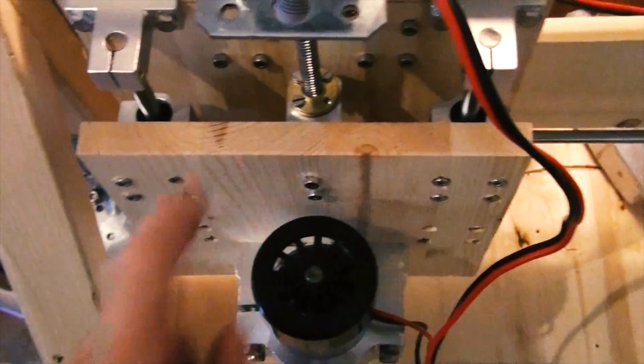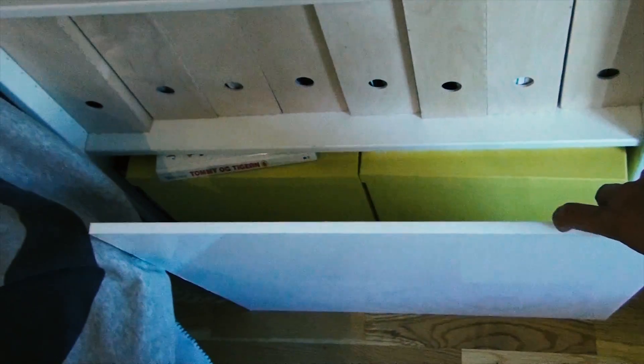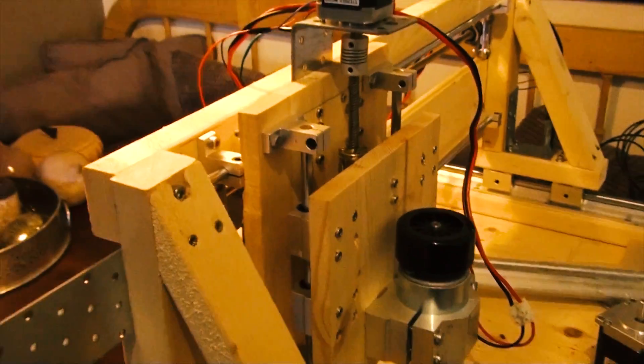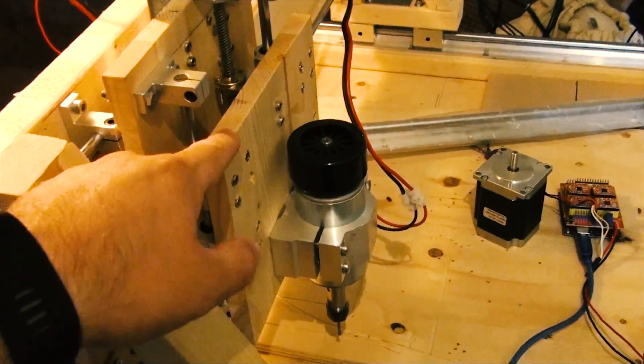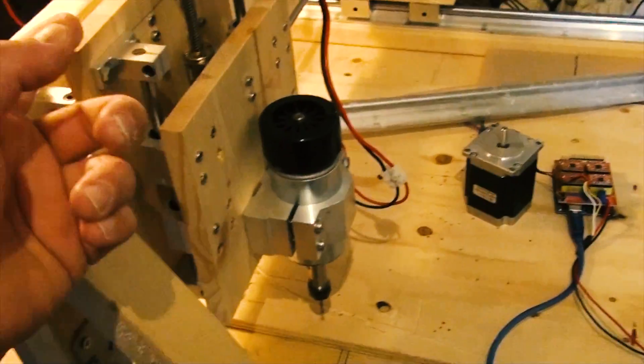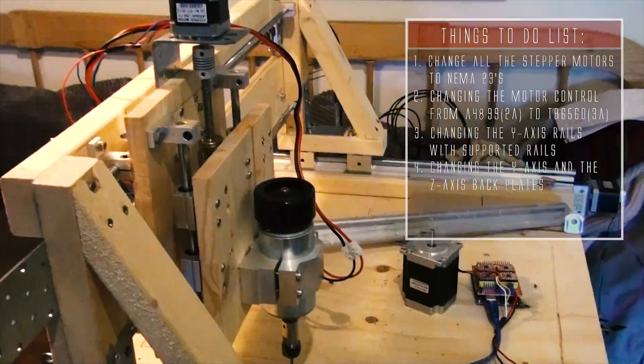My plan there is to use this material - this is called plexiglass material. It's 1.2 centimeters thick, it's sturdy, it's very hard and straight. I think I'll use that material for both the y-axis plate and the z-axis plate.